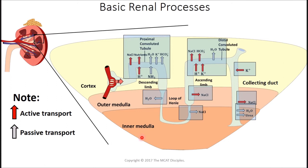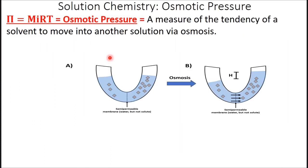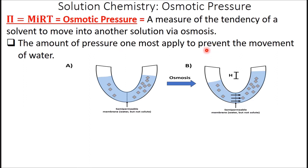Let's review some units — osmotic pressure. In general chemistry, osmotic pressure is calculated as molarity times the van't Hoff factor, which accounts for dissociating ions, multiplied by the ideal gas constant and temperature. Osmotic pressure is a measure of the tendency of a solvent to move into another solution via osmosis — osmosis being the movement of water. In more understandable terms, it's the amount of pressure one must apply to prevent the movement of water.